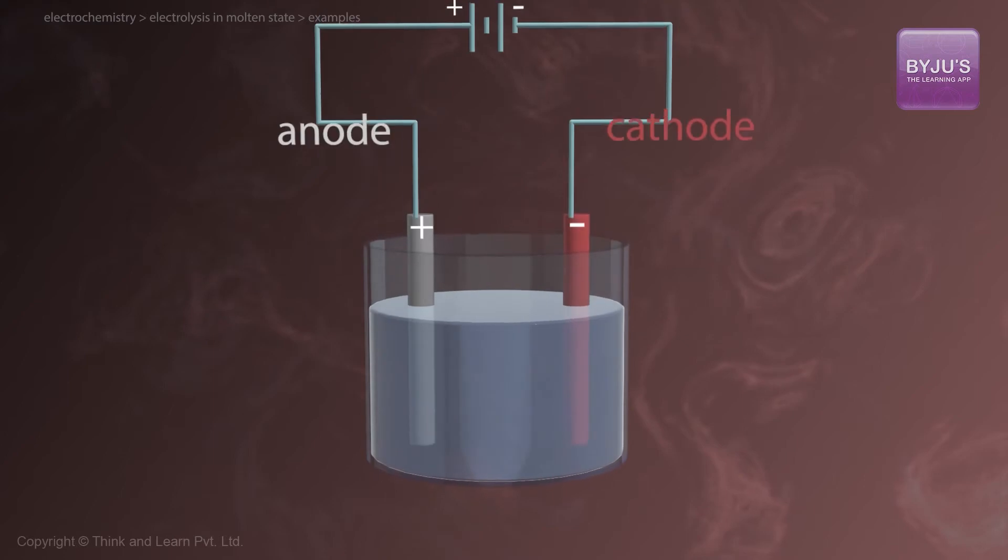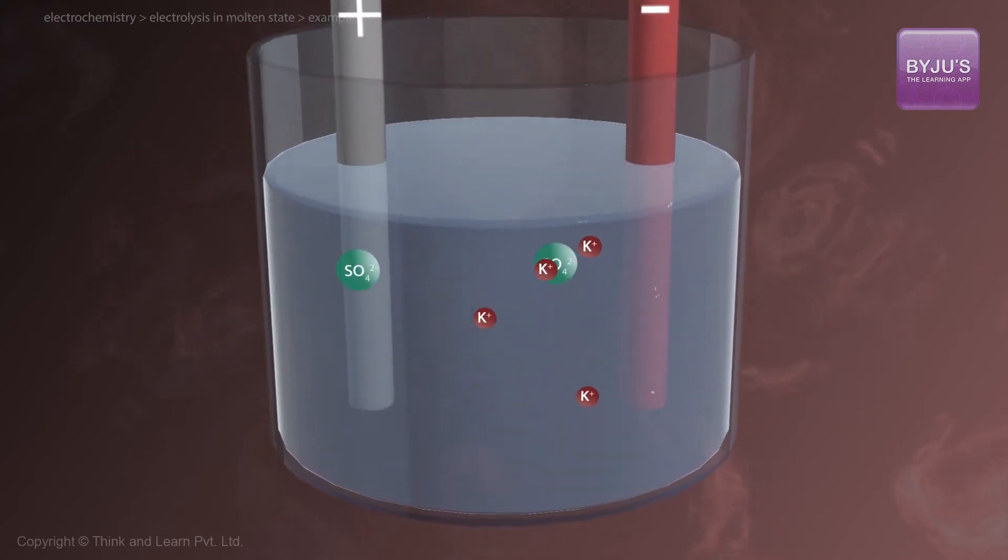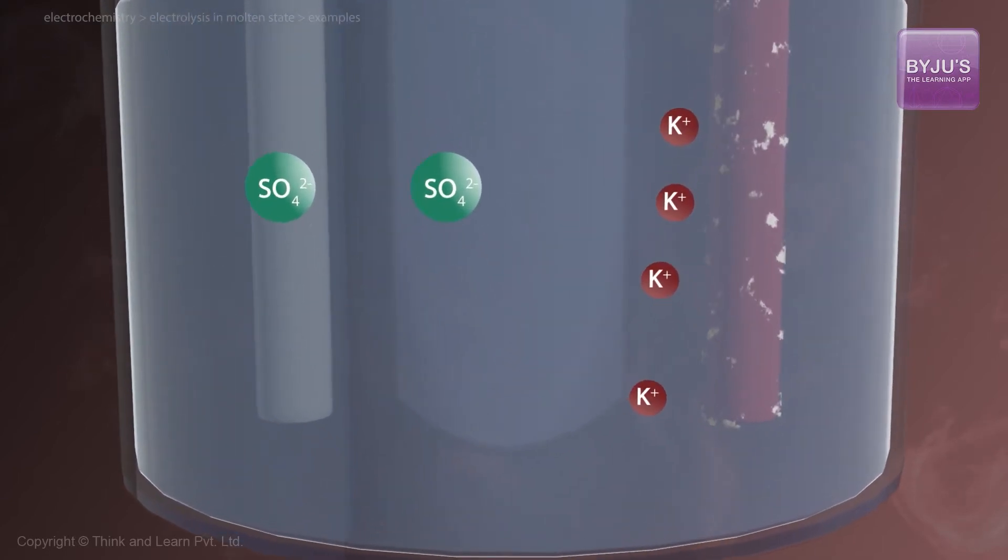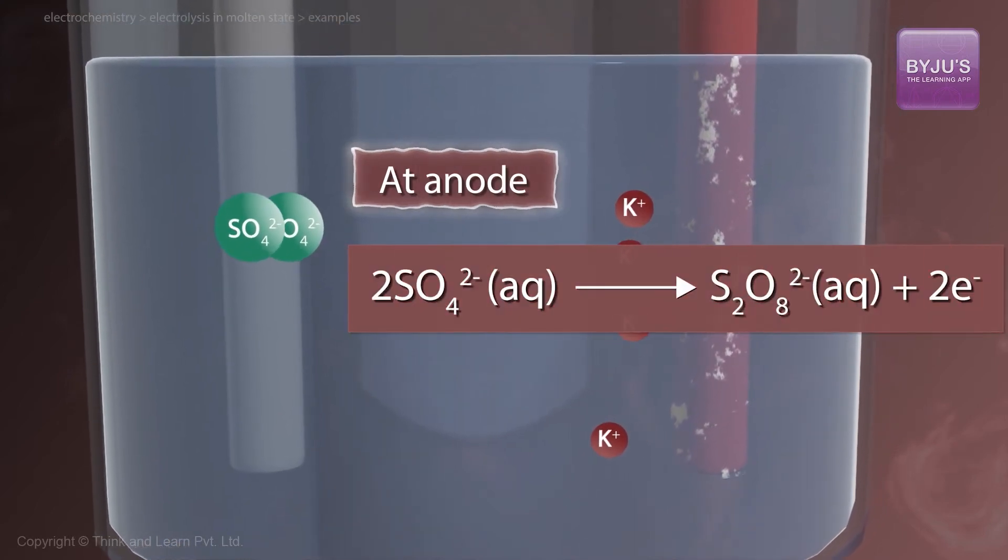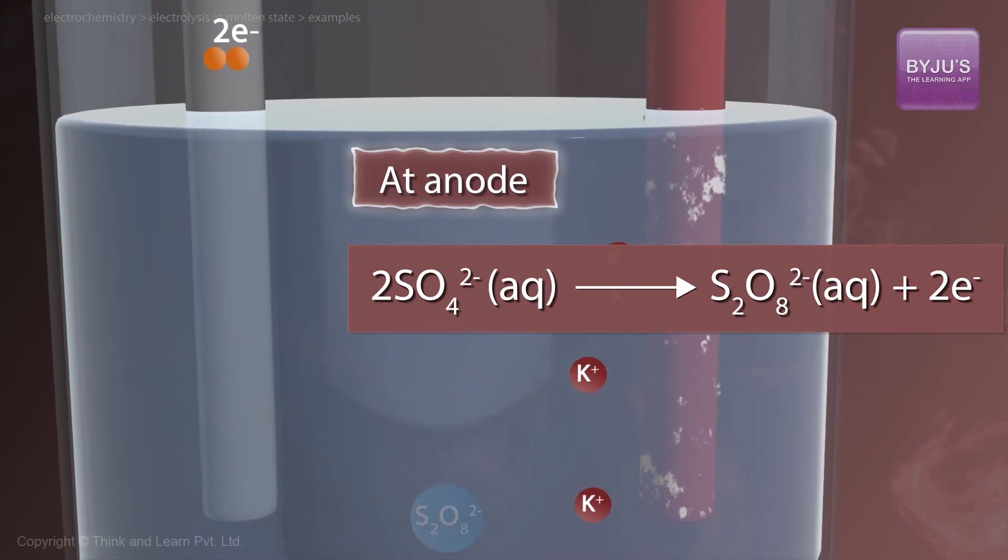Let us take another example: molten K2SO4. K2SO4 gets converted into 2K+ plus SO4 2-. In this case, at the anode, SO4 2- ions get oxidized. 2 SO4 2- gets converted into peroxodisulfate ion, which is S2O8 2-, plus 2 electrons.